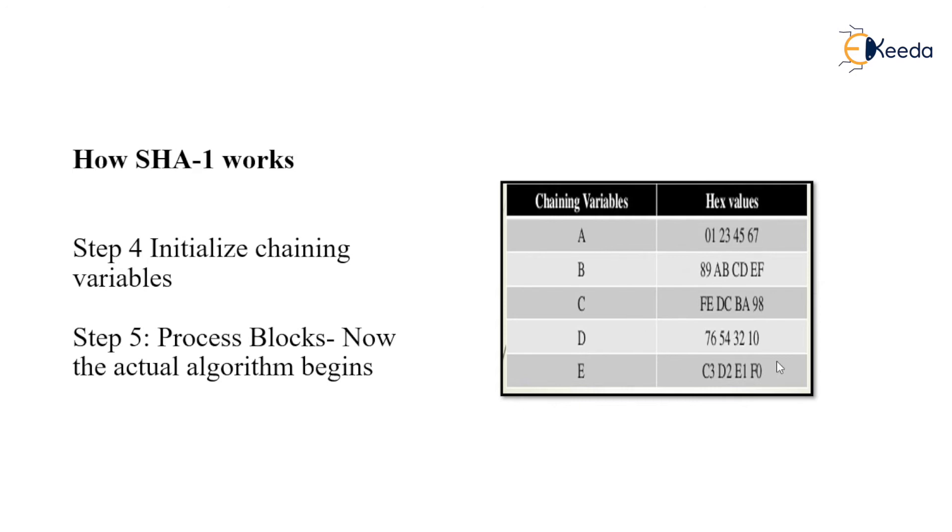These are the predefined hex values for the alphabets A to E. Step 5 is process the blocks. Now the process of blocks encryption or the process of SHA will work, and from step 5 the actual algorithm begins.